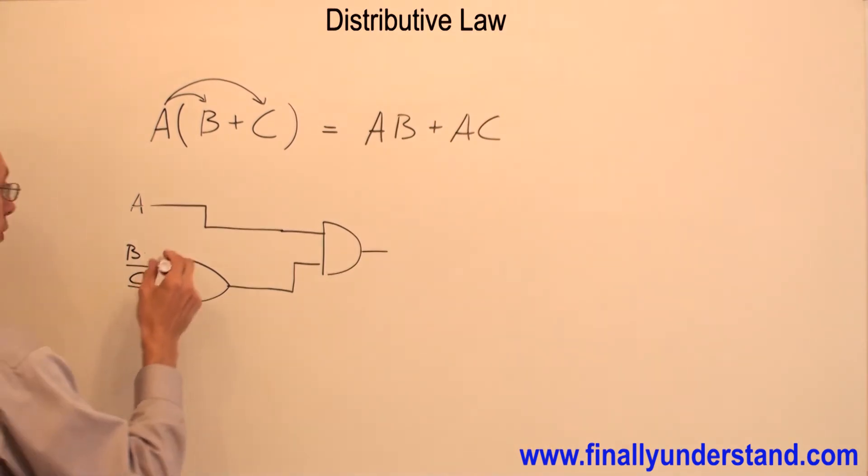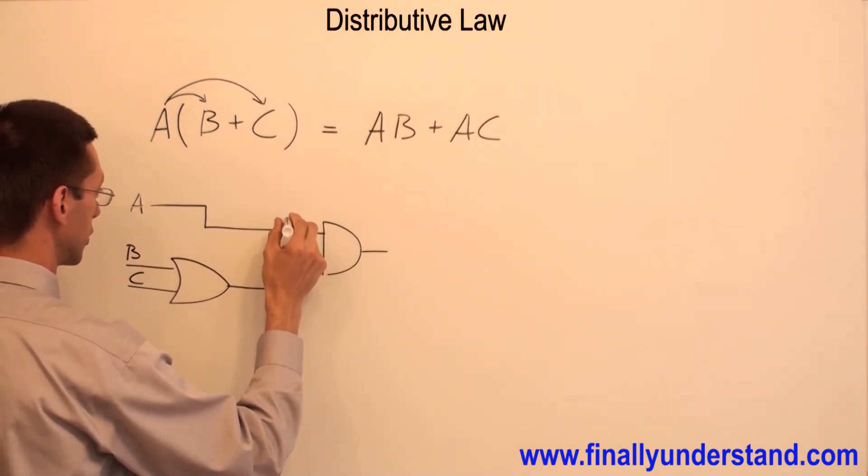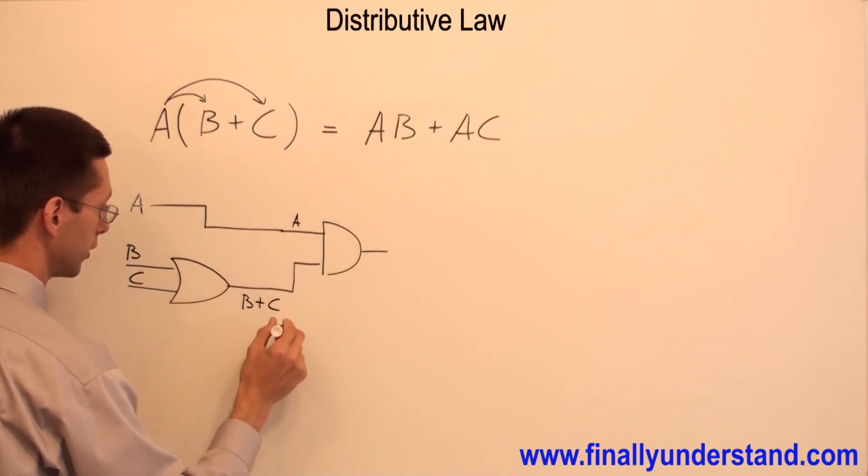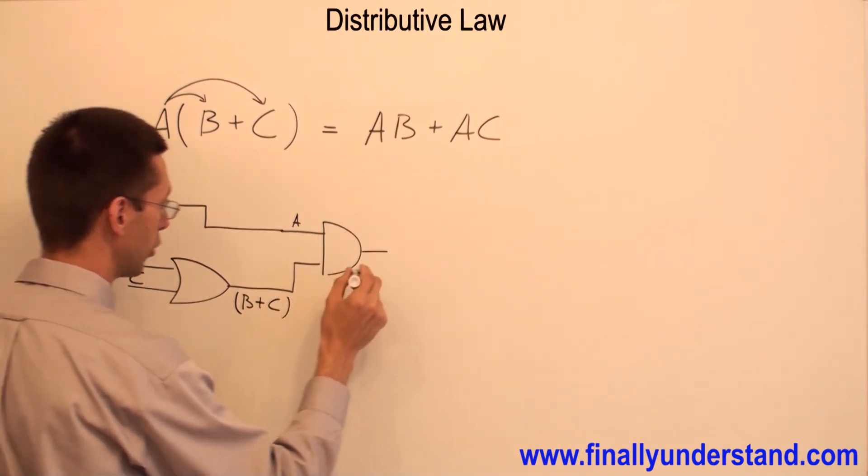Now if you want to find the output function of this circuit you are going to have A. This is going to be B or C. So output is A.